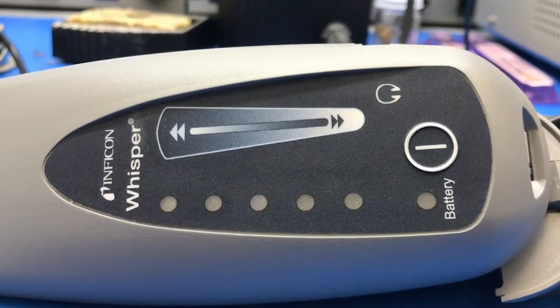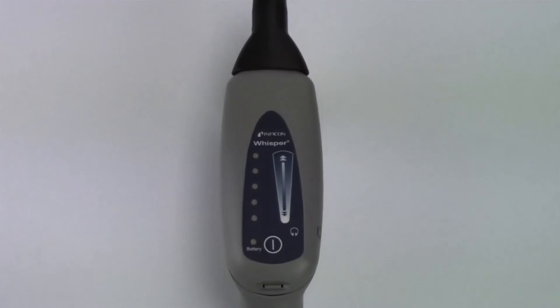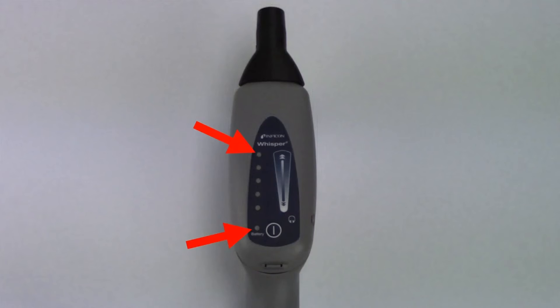When the batteries are low, the power indicator will begin to flash. When the batteries are critically low, the power and highest signal indicators will flash alternately.